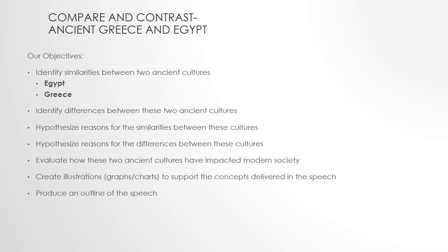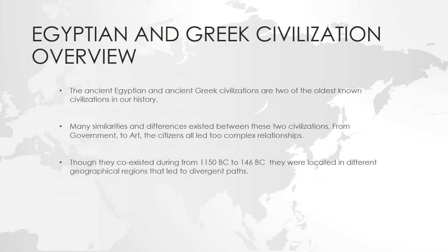We were to identify differences between the two cultures, hypothesize reasons for the similarities and differences, and evaluate how the two ancient cultures impacted our modern society. An overview of the two civilizations I've chosen to work with, Egypt and Greece: they are two of the oldest known civilizations in our history.